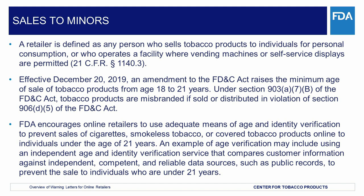A retailer is defined as any person who sells tobacco products to individuals for personal consumption or who operates a facility where vending machines or self-service displays are permitted. The Further Consolidated Appropriations Act 2020, enacted on December 20, 2019, established and made immediately effective a new federal minimum age for the sale of tobacco products, Publication L. 116-94, Section 603. Specifically, the Appropriations Act amended Section 906(d) of the FD&C Act to make it unlawful for any retailer to sell a tobacco product to any person younger than 21 years of age.